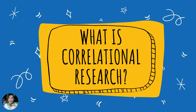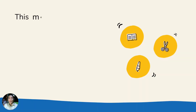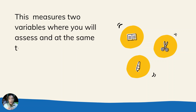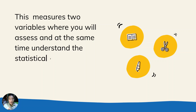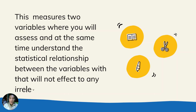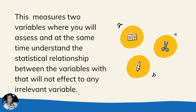So what is correlational research? Correlational research measures two variables where you will assess and at the same time understand the statistical relationship between the variables that will not affect any irrelevant variable. It is a type of non-experimental research method in which you measure two variables, assess and understand the statistical relationship between them. In short, it tries to figure out if two or more variables are related.